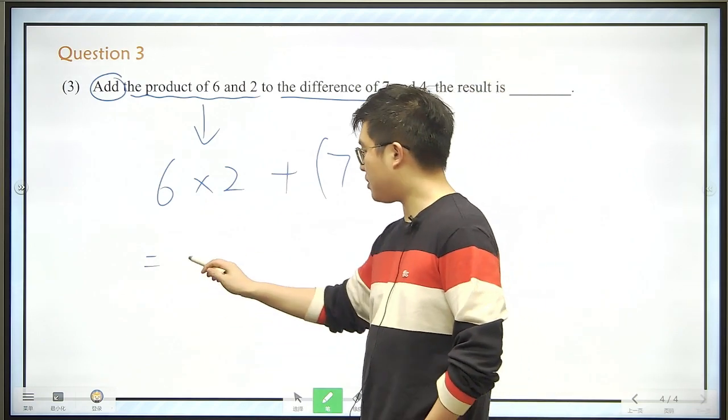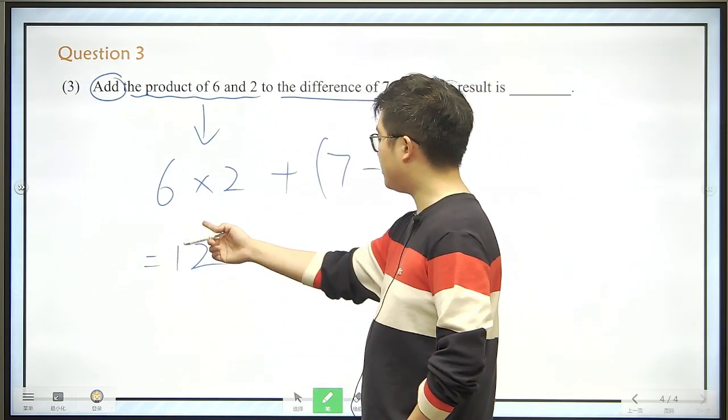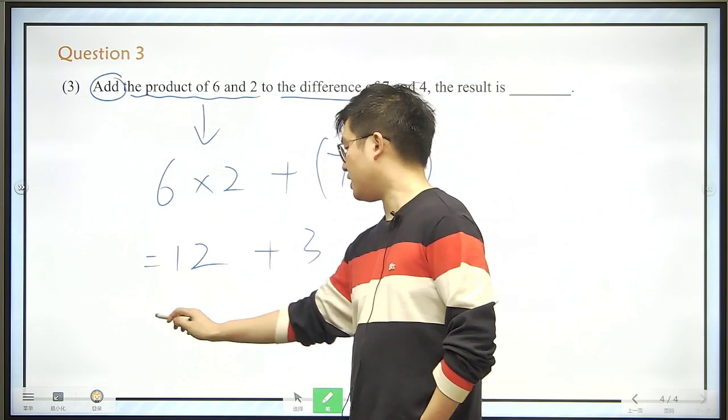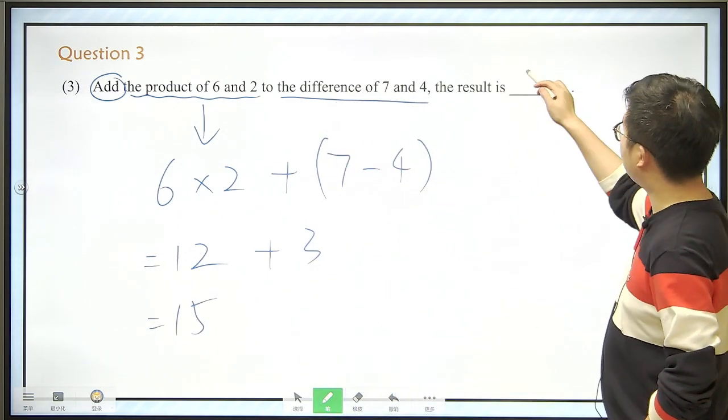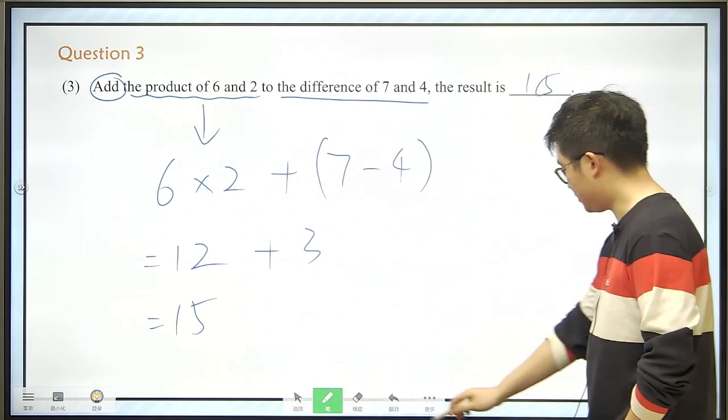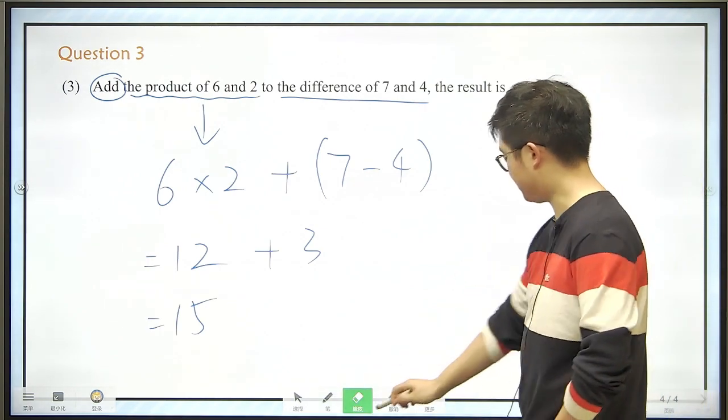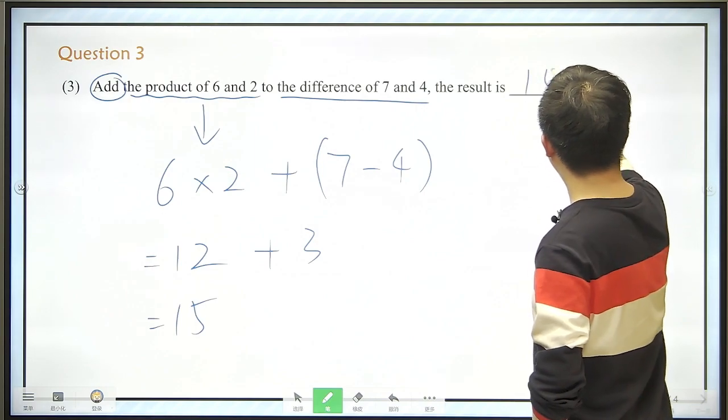This is 12, and this is 3, add them up, it ends up 15. So 15 is the right answer. Just rewrite it, perhaps 15, alright?